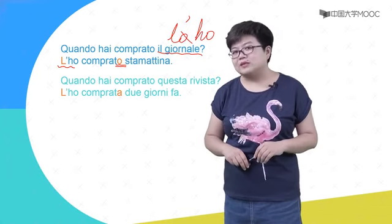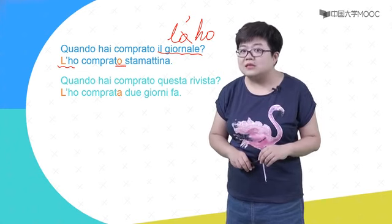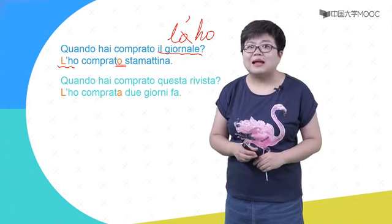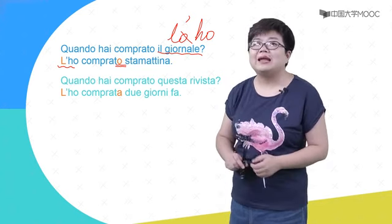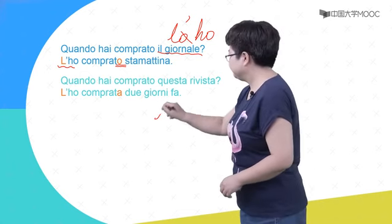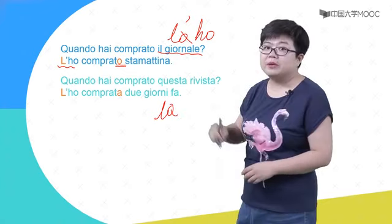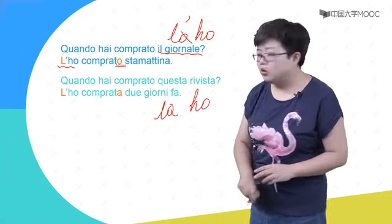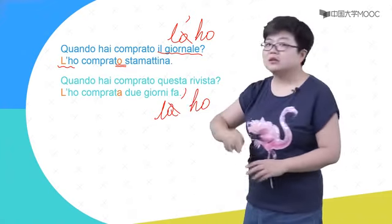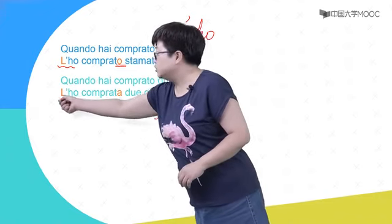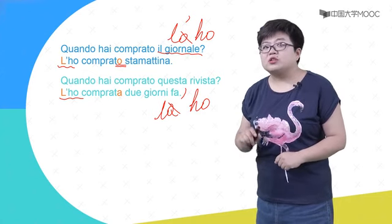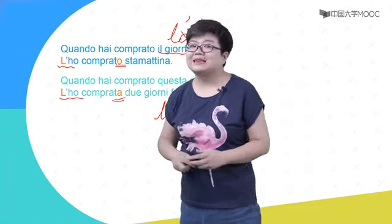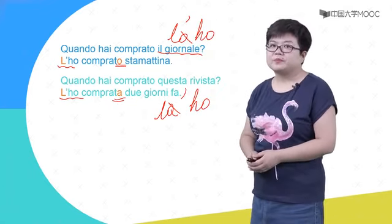Comprato这个过去分词一定要跟直接宾语代词的性数保持一致。直接宾语代词在这里用的是Lo，它代替的是il giornale，阳性单数的概念，所以词尾也要用阳性单数的形式：L'ho comprato。下面这个句子：Quando hai comprato questa rivista? 什么时候买的这本杂志呢？这是用La来代替的，因为它是阴性单数的概念，所以我们就说：L'ho comprata, due giorni fa. 这个L'apostrofo其实是La，代替的是questa rivista，所以过去分词comprata要和它的性数保持一致。